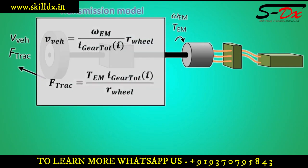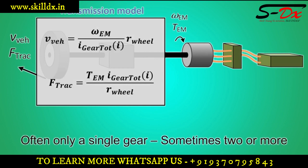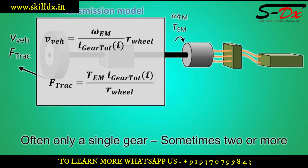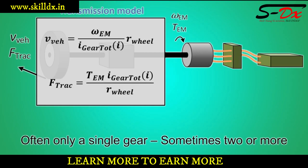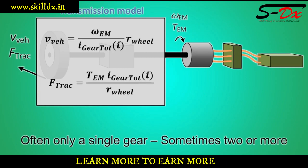The equations are exactly the same as for a combustion engine powertrain. Since an electric machine can operate efficiently in a wider operating range than the combustion engine, there is less reason for having several gears to select from. Many electric powertrains therefore only have a single gear, while some have two gears or maybe even more to improve efficiency or to extend the vehicle operating range without needing an unnecessarily expensive electric machine.